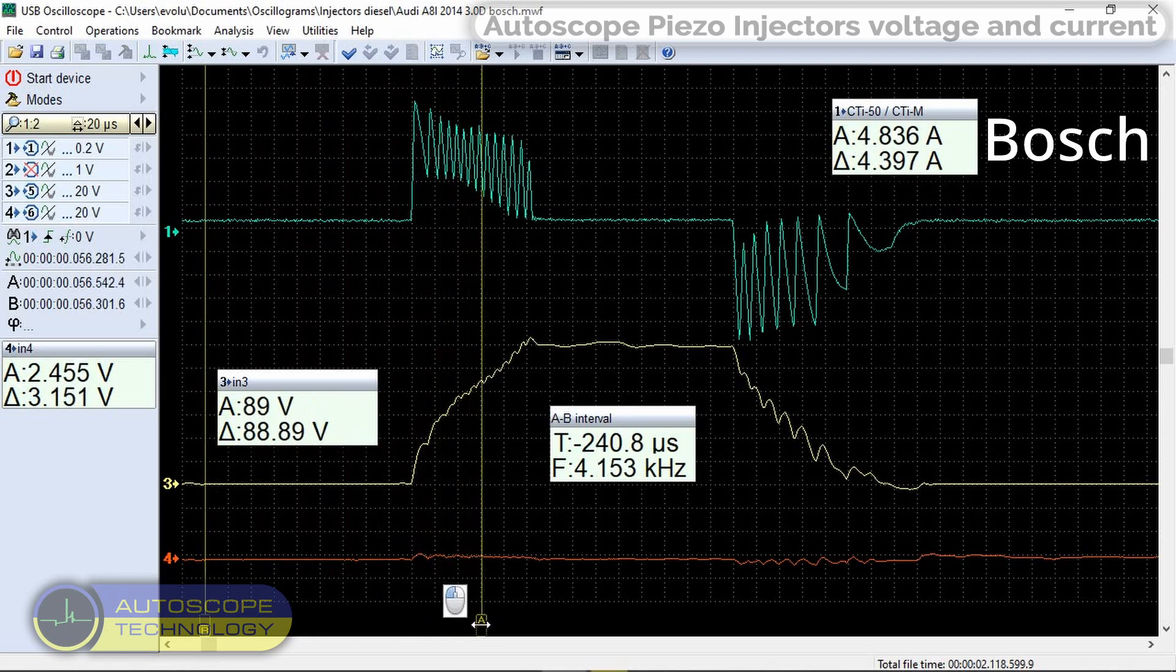This is the voltage pulse on the supply wire of the injector at the moment of its opening. Its amplitude can reach 125 volts.